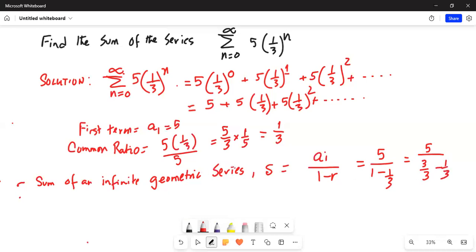So, the sum becomes equal to 5 divided by, in the denominator, common denominator is 3, 3 minus 1 in the numerator is 2 thirds.